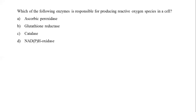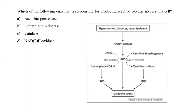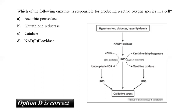The next question: which enzyme is responsible for producing reactive oxygen species in a cell? Options are ascorbate peroxidase, glutathione reductase, catalase, or NADPH oxidase. In biological context, ROS are byproducts of normal oxygen metabolism. NADPH oxidase (NOX) is a transmembrane enzyme located in intracellular organelles comprising several isoforms. NOXs are one of the major sources of cellular ROS, with exclusive function in producing ROS under normal physiological conditions. The correct answer is option D, NADPH oxidase.